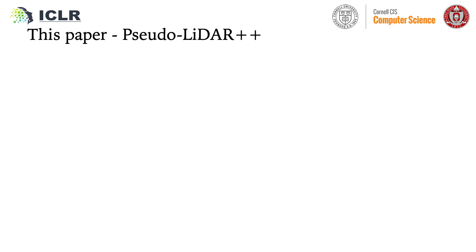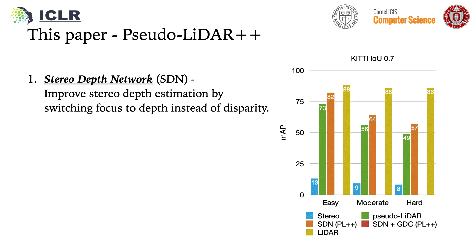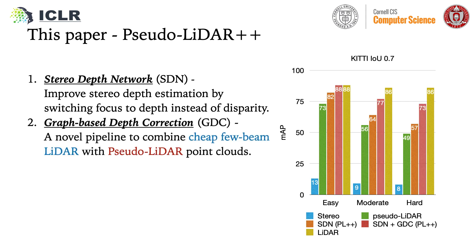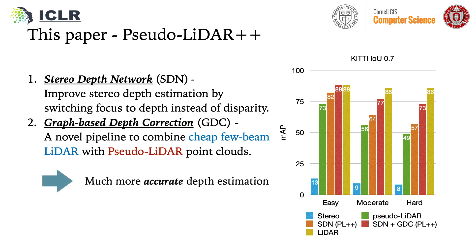First, on the depth estimation front, we propose switching the focus from minimizing disparity error to minimizing depth error. Second, to compensate for the inherent difficulty in image-depth estimation, we propose a novel pipeline that combines inexpensive few-bin LIDAR with Sudolidar. By these two changes, we obtain much more accurate depth estimation, and therefore much more accurate detections, while keeping the monetary cost low.